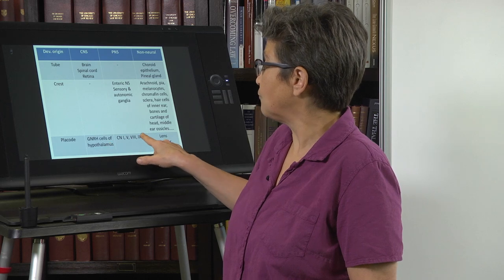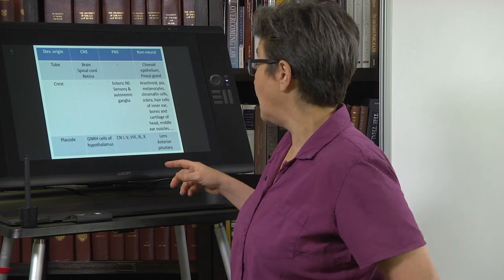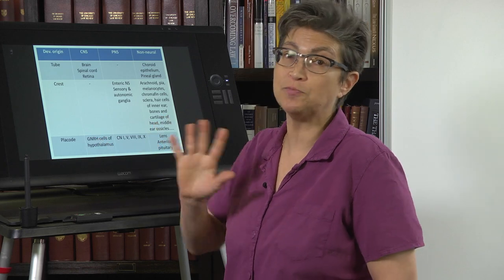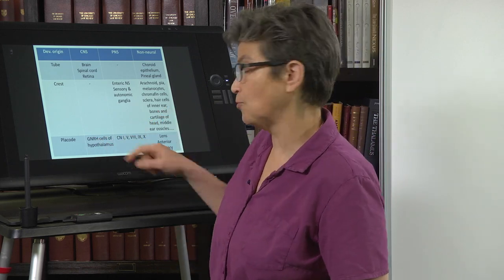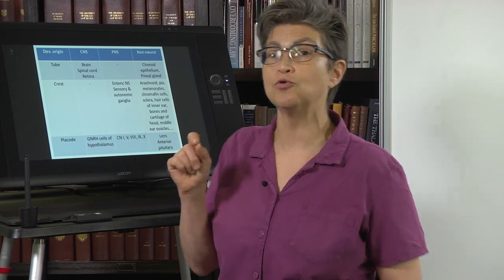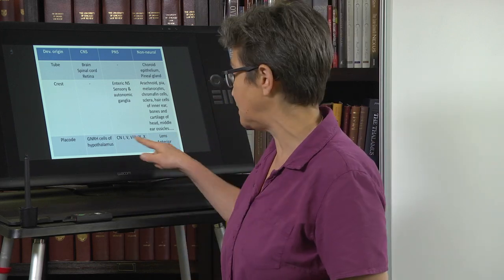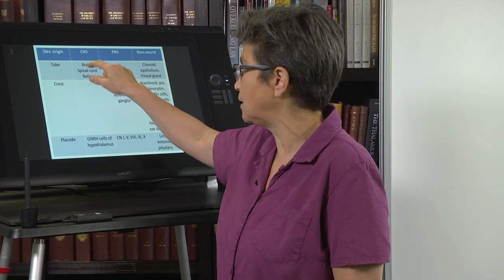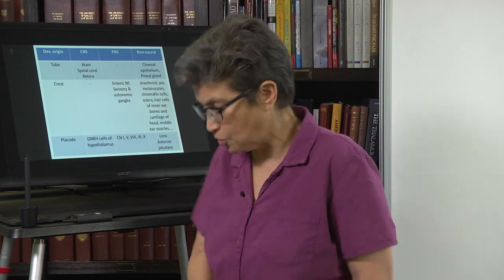The placodes give rise to sensory neurons of several cranial nerves. They also give rise to the lens and to the anterior pituitary — these are non-neural cell types. The placode also gives rise to a group of cells that lives in the hypothalamus, and these cells migrate across the olfactory nerves to get into the central nervous system. These are the only cells in the central nervous system that don't come from neural tube origin.